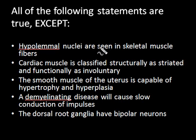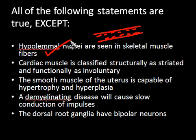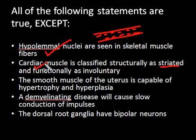The first statement: hypolemmal nuclei are seen in skeletal muscle fibers. This is true — if you look at a skeletal muscle fiber, which is like a cylinder, the nuclei are like ants in a line present just below the sarcolemma. The second statement: cardiac muscle is classified structurally as striated, and that is right because it has striations, but functionally it is involuntary. This is also true, just as skeletal muscle is striated but functionally voluntary.